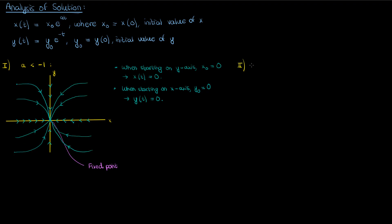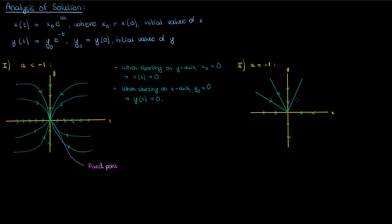Let's consider the next case where a is now equal to negative 1. In that case both x and y will approach the fixed point at the exact same rate. Trajectories starting at the x and y axes will approach the origin just like before, but trajectories starting elsewhere will approach the origin in basically a straight line, since the coefficient on both exponentials in x(t) and y(t) is negative 1. So a pretty simple case overall.